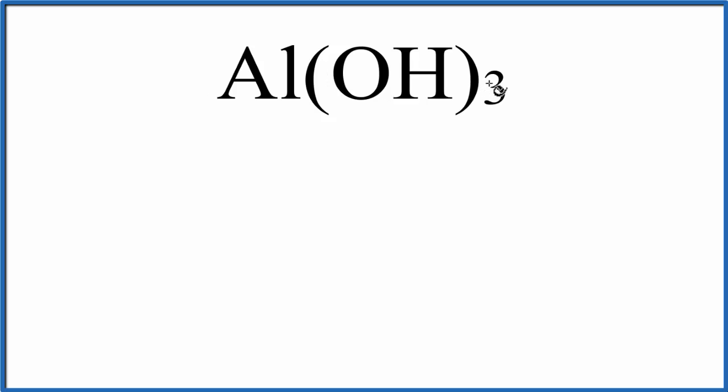For aluminum hydroxide, we have something a little different here - we have these parentheses. And what that means is we'll add things up in the parentheses, we'll add the molar mass for oxygen and hydrogen, and then we'll multiply that by three. So the three applies to everything here in the parentheses.